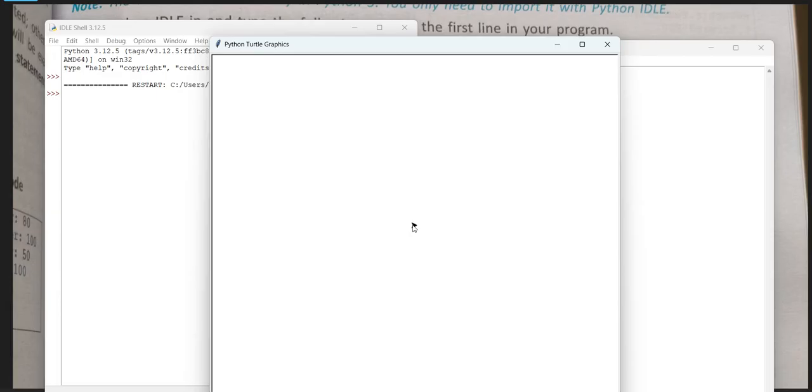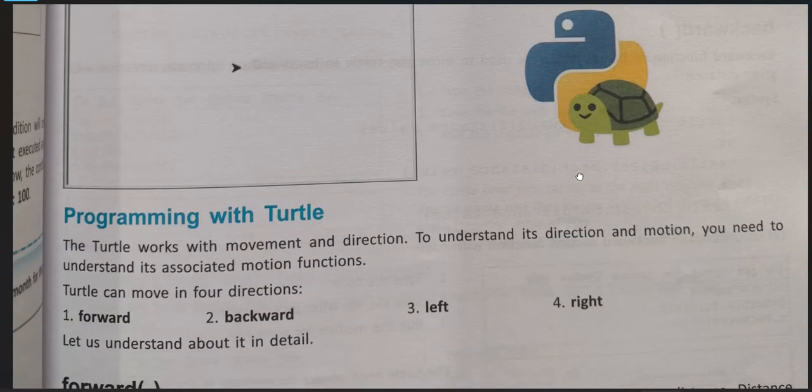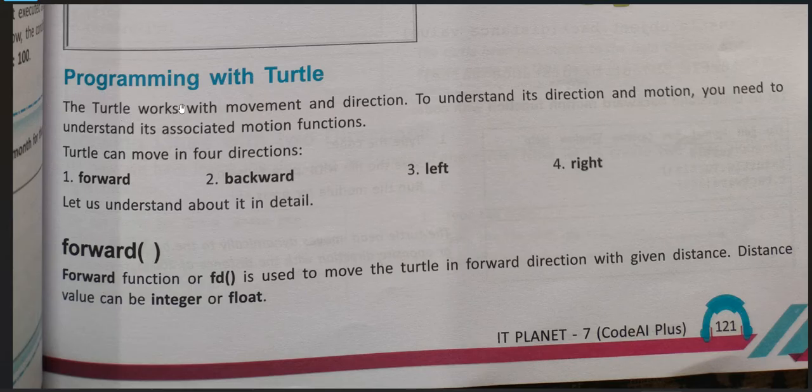Suppose we want to draw a line from here to here. So we need to move this arrow from here to here. If backward line you want, you need to change the direction of this turtle and then draw. We will see how we can do it. Let's do step by step. Programming with turtle - the turtle works with the movement and direction. To understand its direction and motion you need to understand its associated motion functions. Means move forward, move backward, move left side, move right side. These are the functions. Because we need to change the direction of the arrow.